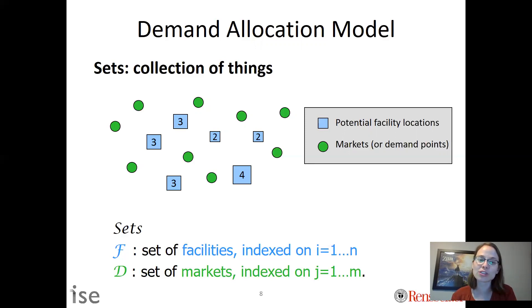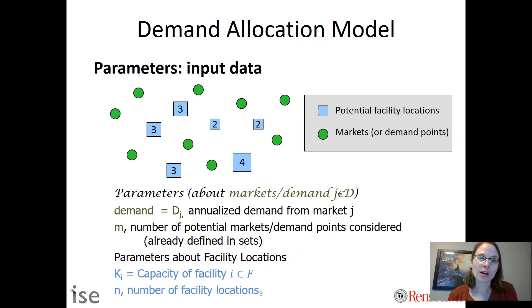And then big D be the set of markets. Using set notation, the beauty of this is if I added a green dot or deleted a green dot, I don't have to do anything in terms of the formulation. The data would change but the model formulation wouldn't. In terms of the next step, which is to denote our input parameters, these are things that do not change in our model.